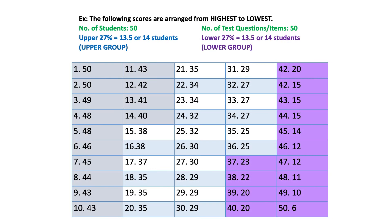Let's have an example. Suppose you had a try-out sample of 50 cases with 50 items, and the scores are arranged from highest to lowest. The highest score is 50, and the lowest score is 6. 27% of 50 is 13.5 — round it up and label the first 14 cases as the upper group, and the last 14 cases as the lower group. In the upper group, the highest score is 50 and the lowest is 40. In the lower group, the highest score is 23 and the lowest is 6. Following this, set aside the test papers of the 15th to 36th students.